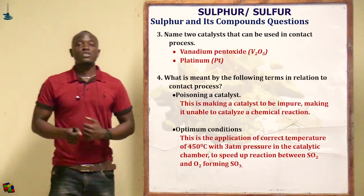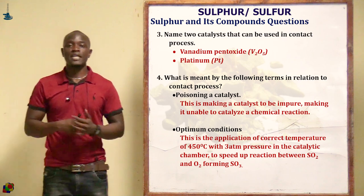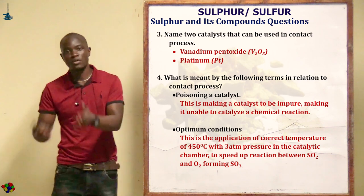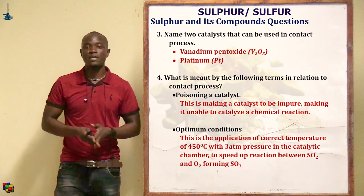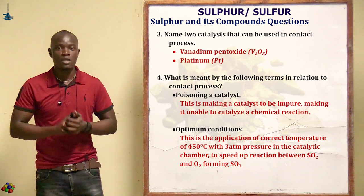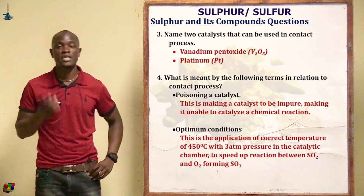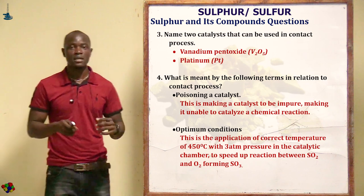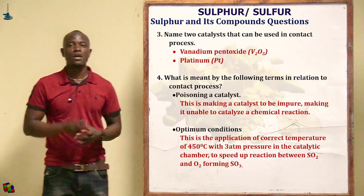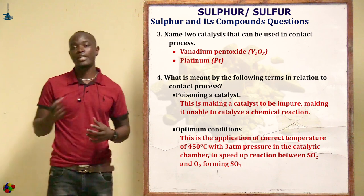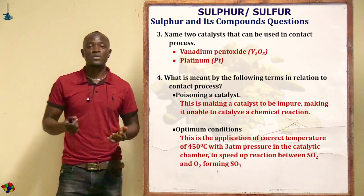The next question asks to name two catalysts used in the contact process. The answer is vanadium pentoxide and platinized asbestos (or platinum catalyst). Either of those two catalysts can be used in the contact process.